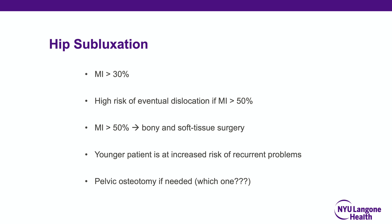When the migration index exceeds 50%, it is recommended — provided the child is healthy enough — that both bony and soft tissue surgeries be discussed with the family. Younger patients are at increased risk of recurrent subluxation even with appropriate care. Pelvic osteotomy must be considered if needed: in some children a VDRO alone is acceptable, but if there is significant acetabular deformity, a pelvic osteotomy such as a Dega osteotomy is needed. Dega osteotomies decrease acetabular space, so you must confirm a capacious acetabulum beforehand.